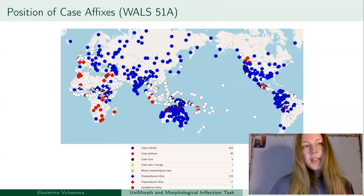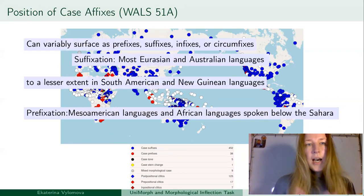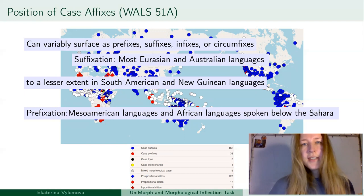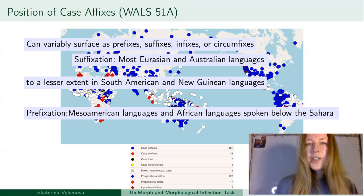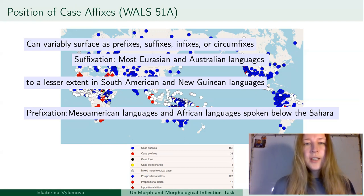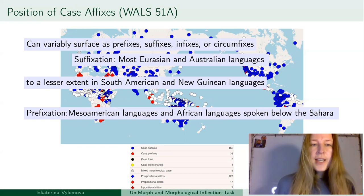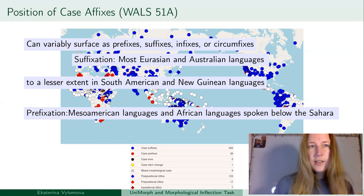Finally, in terms of position of case affixes, we might have suffixes, prefixes, infixes, or circumfixes. Suffixation is common for Eurasian and Australian languages, and to a lesser extent it is present in South American and New Guinean languages. Whereas prefixation is common for Mesoamerican languages and African languages spoken below the Sahara.